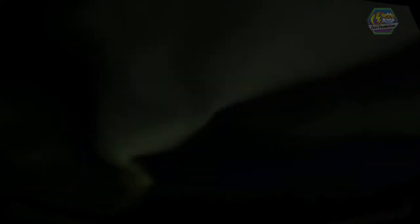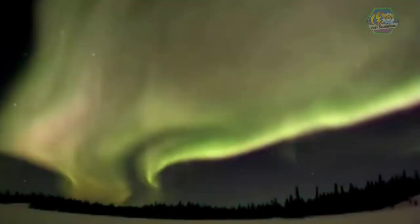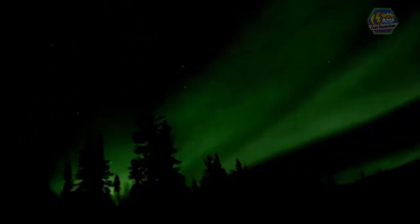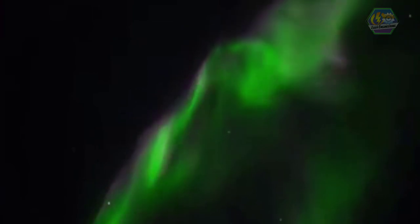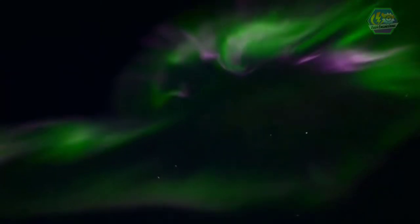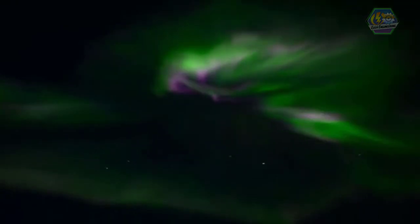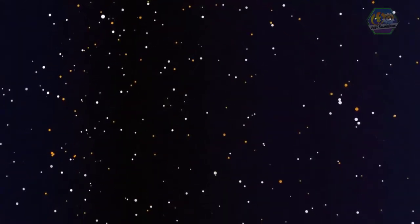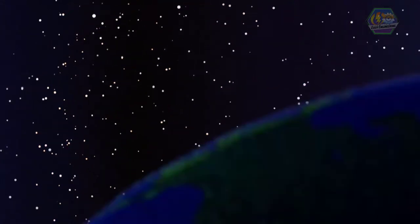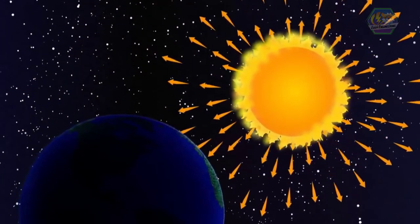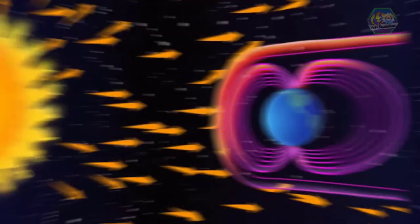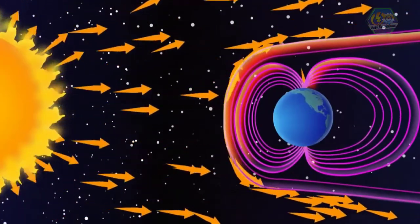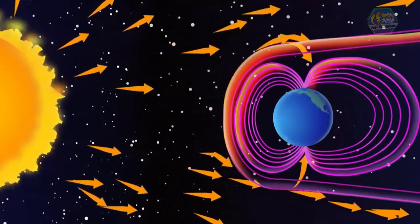Have you ever seen the aurora borealis, or the so-called northern lights? It's beautiful, isn't it? Well, this phenomenon has something to do with magnetism. If the Earth is in the path of a particle stream, our planet's magnetic field and atmosphere react. When charged particles from the sun strike atoms and molecules in Earth's atmosphere, they excite those atoms, causing them to light up. Amazing, right?